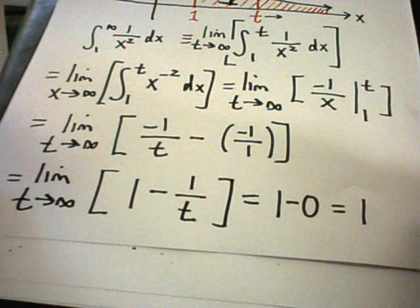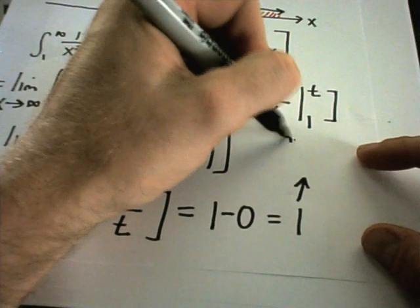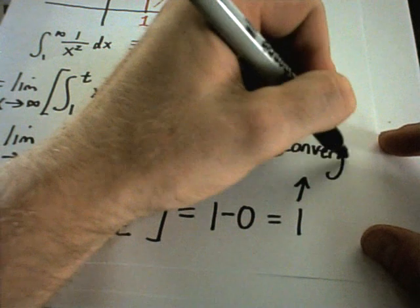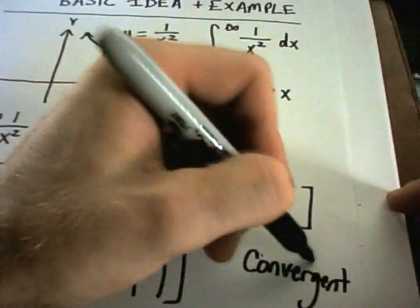A little bit of terminology: when you go through one of these improper integrals as we did here, if you get a finite number out, we say that the original integral, the integral, is called convergent. So in this case we have a convergent integral.